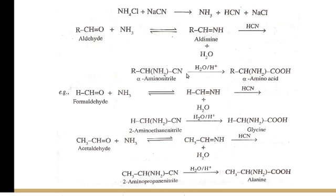This alpha-amino nitrile on acidic hydrolysis gives the alpha-amino acid — the CN group becomes COOH. So there will be an acidic group and an amino group on the alpha carbon. Alpha carbon means a carbon atom next to a COOH functional group. This gives the alpha-amino acid.